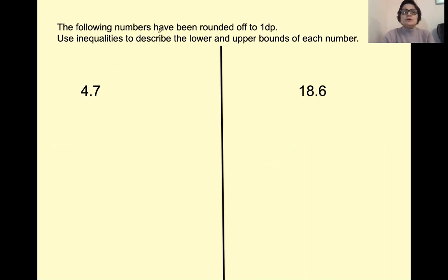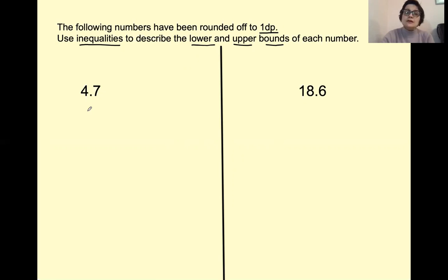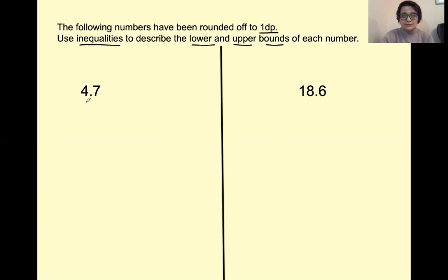It says the following numbers have been rounded off to one decimal place. Use inequalities to describe the lower and upper bounds of each number. One thing you have to remember: when you identify the lower and upper bounds of numbers that have been rounded to one decimal place, that doesn't mean that you have to round this number to one decimal place. The number has already been rounded, so we need to find the numbers that can be rounded to one decimal place and give this answer.